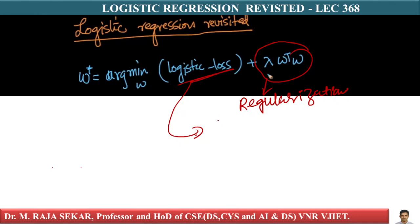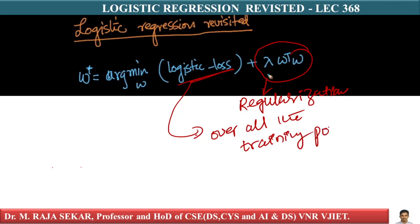What is this logistic loss? The logistic loss is computed over all training points — it is the logistic loss summed over all the training points.